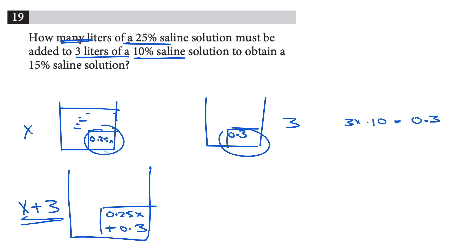So the numerator is gonna be 0.25x plus 0.3, which is the amount of salt, and then divided by x plus 3. Here is gonna be equal to the amount of the salt in it, and now this is 15%, right? So that's 0.15.